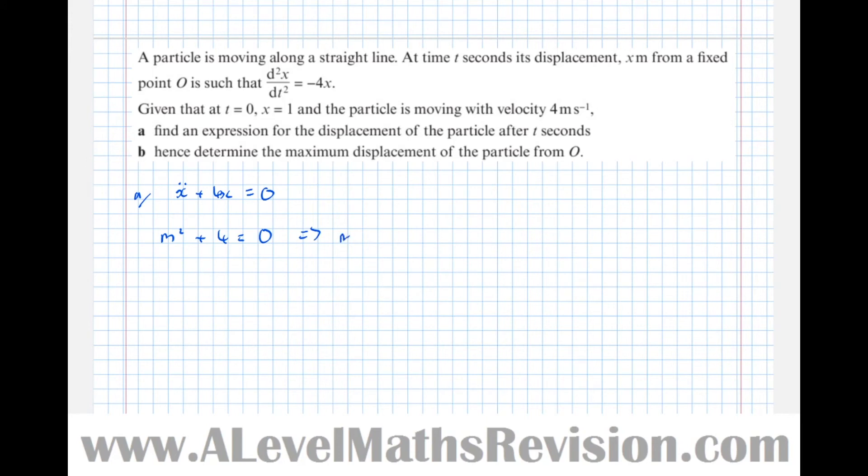Let's find the auxiliary equation which is m squared plus 4 equals 0, which means that m squared equals minus 4. So m equals plus or minus 2i. By this point you should be well practised with your second order differential equations, well practised enough to know that when the roots are purely imaginary...